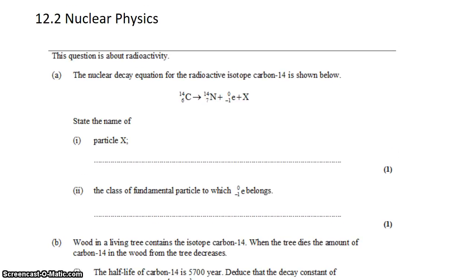It says the decay equation for radioactive isotope carbon-14 is shown below. And we want to state the name of particle X in the equation. So there's something that came out of the decay. We don't know what it is.